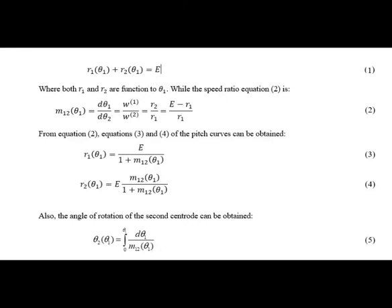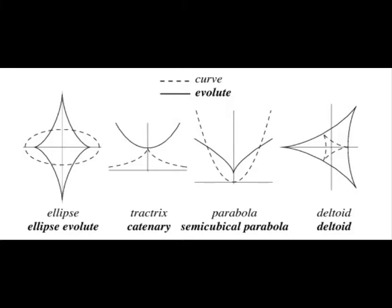As was shown in the first video, the equations describe the relationship between the centroids as follows: the summation of the radius of the first gear and the second gear also forms the center distance, where both r1 and r2 are functions of theta1. The speed ratio equation is shown here. From equations 2 and 1, we can conclude the pitch curve equations. Also, the angle of rotation of the second centroid can be obtained. It can be noted easily that these equations are still valid even for circular gears.